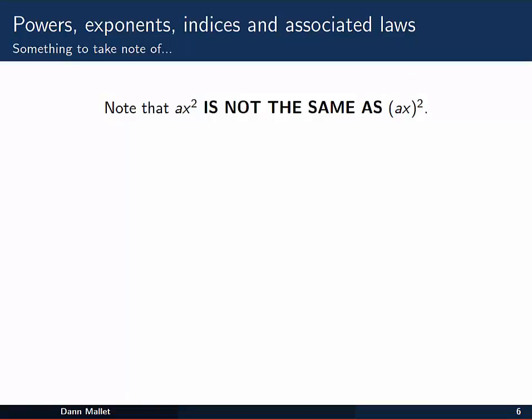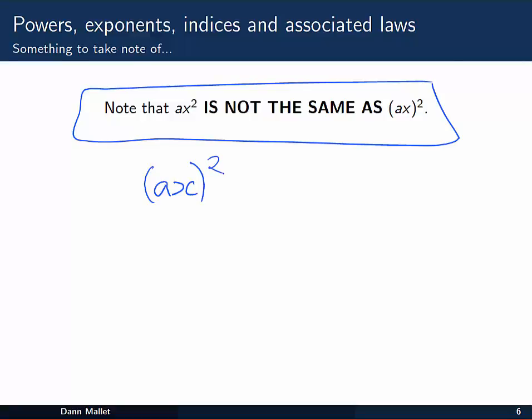Now this is probably a good time to point something out. This is a really important one that people often mix up. ax² is not the same as (ax)². And now you can see why. Because (ax)², according to our index laws, we need to put that square onto each of those elements inside and get a²x². That of course is not the same as ax². A lot of times you'll see people make that mistake. Well, now you can see that they're not.